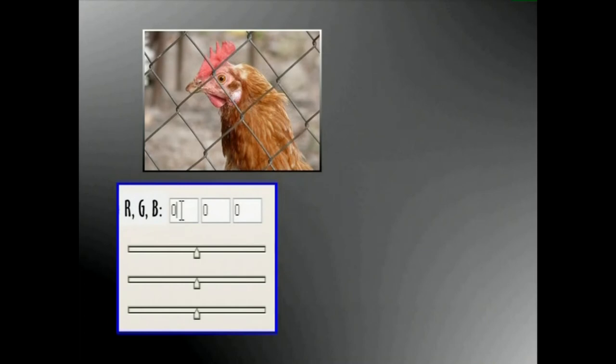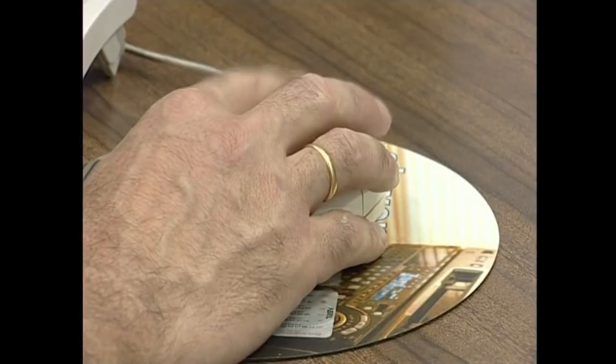Hau da, gorriegi atera diren irudietan, gorria jaitxi egin behar dugu apur bat. Jarraian, berdeak eta urdinak igo egin behar ditugu, gorria jaitxi dugun kantitatearen erdia gutxi gora behera.